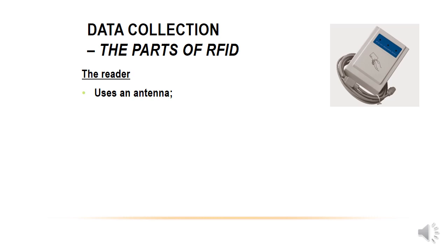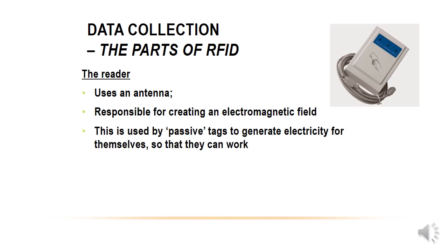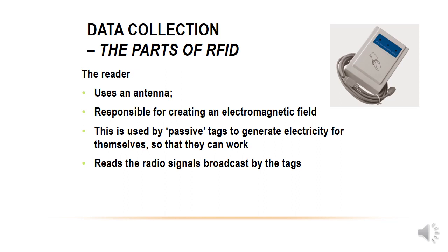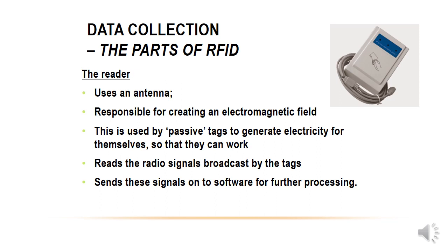The reader uses an antenna and is responsible for creating an electromagnetic field. Once that field has been created in a certain area, if a passive RFID tag comes into that area, the electromagnetic field generates electricity into the tag so it can work and communicate with the reader. The reader then reads the radio signals broadcast by the tag and sends them on to software to process that data.